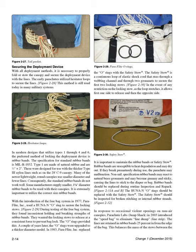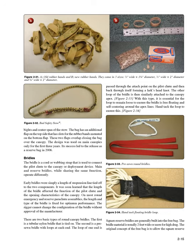Rubber bands should be replaced during routine inspection and repack. Non-mil-spec rubber bands may react to natural brass grommets and become gummy and sticky, causing lines to stick to the diaper or bag. The Buna-N O-rings should be replaced with the safety stow. The safety stow should be inspected for broken stitching or internal rubber strands. In response to occasional violent openings on ram air canopies, Parachute Labs (Jump Shack) in 2003 introduced the speed bag to eliminate line dump. The lines are retained in rubber bands 25% from the edge of the bag, balancing the mass of the stows. The bag has an additional flap on the top side with slots for rubber bands mounted on the bottom flap—these two flaps overlap closing the bag over the canopy. The design was used on main canopies only for the first three years; its success led to release as a reserve bag in 2006.